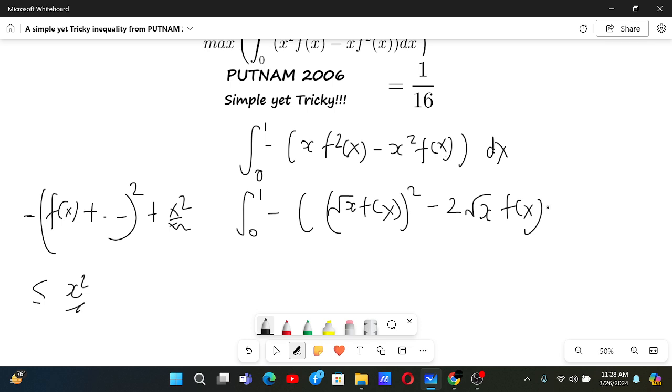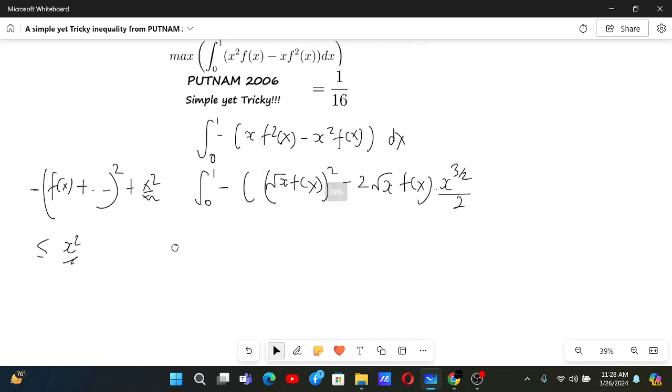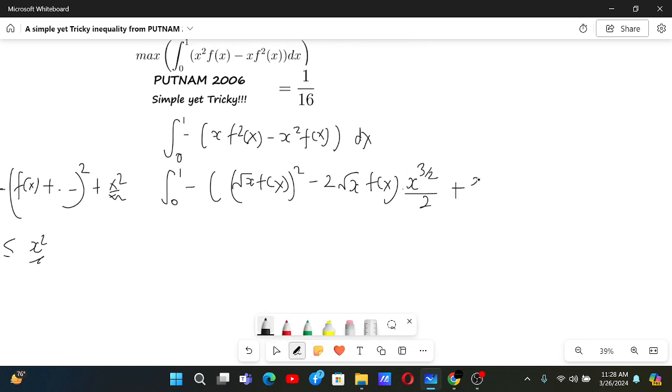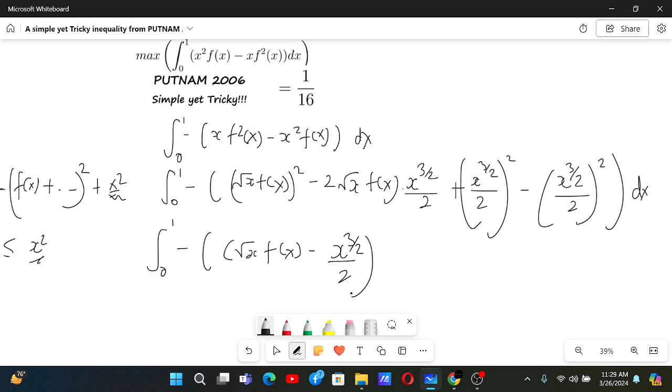Now to make this expression, we need to have x to the power 3 by 2 by 2, and then plus x to the power 3 by 2 by 2 squared minus x to the power 3 by 2 by 2 squared, dx. And then minus minus plus, this is x cubed by 4 dx.